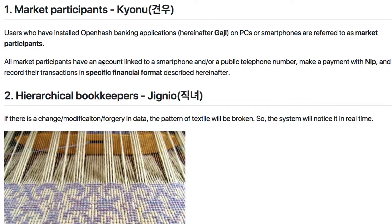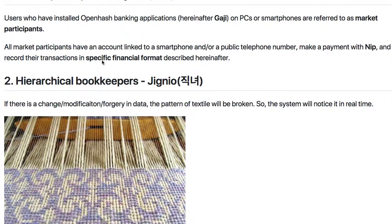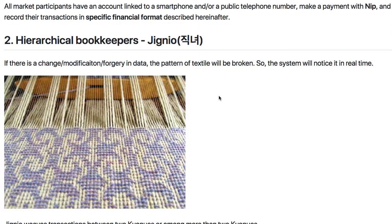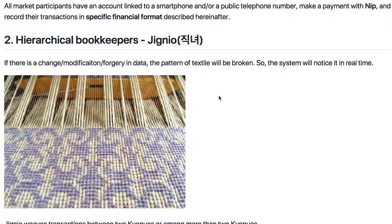There are hierarchical bookkeepers called jingyo. There are four kinds of jingyos: Onnuri, Supul, Grootgi, and Namu.